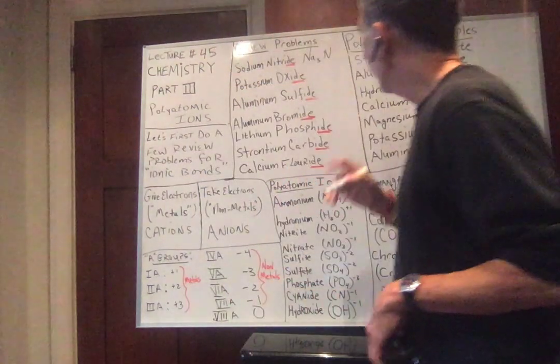Sodium chromate. Sodium, group 1A, is plus one. Chromate is CrO₄, needs two electrons. Sodium gives one electron; this needs two. So if I take two sodiums and one chromate: gives two electrons, takes two electrons. I can take the parenthesis away since there's only one chromate ion needed. The formula for sodium chromate is Na₂CrO₄.